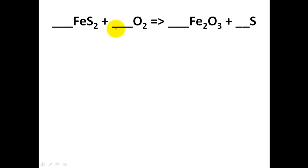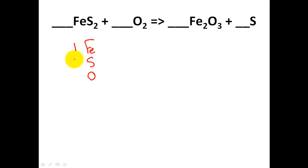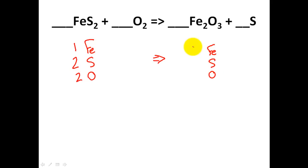There are some blanks here — sometimes I include blanks and sometimes I don't. Let's take an inventory of what's going on. We have iron, sulfur, and oxygen. I have one iron atom, two sulfur atoms, and two oxygen atoms. On the product side, I have iron, sulfur, and oxygen as well — two irons, three oxygens, and one sulfur. I got those from the subscripts.